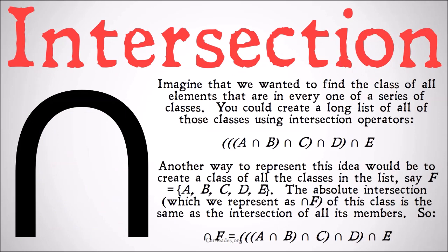Imagine that we wanted to find the class of all elements that are in every one of a series of classes. We want to find what elements are in every single one. You could create a long list of all of those classes using intersection operators to define that class, and it would work perfectly well. So if we wanted to find the elements in all of A, B, C, D, and E, we could write the intersection of E and the intersection of D and the intersection of C and the intersection of A and B.